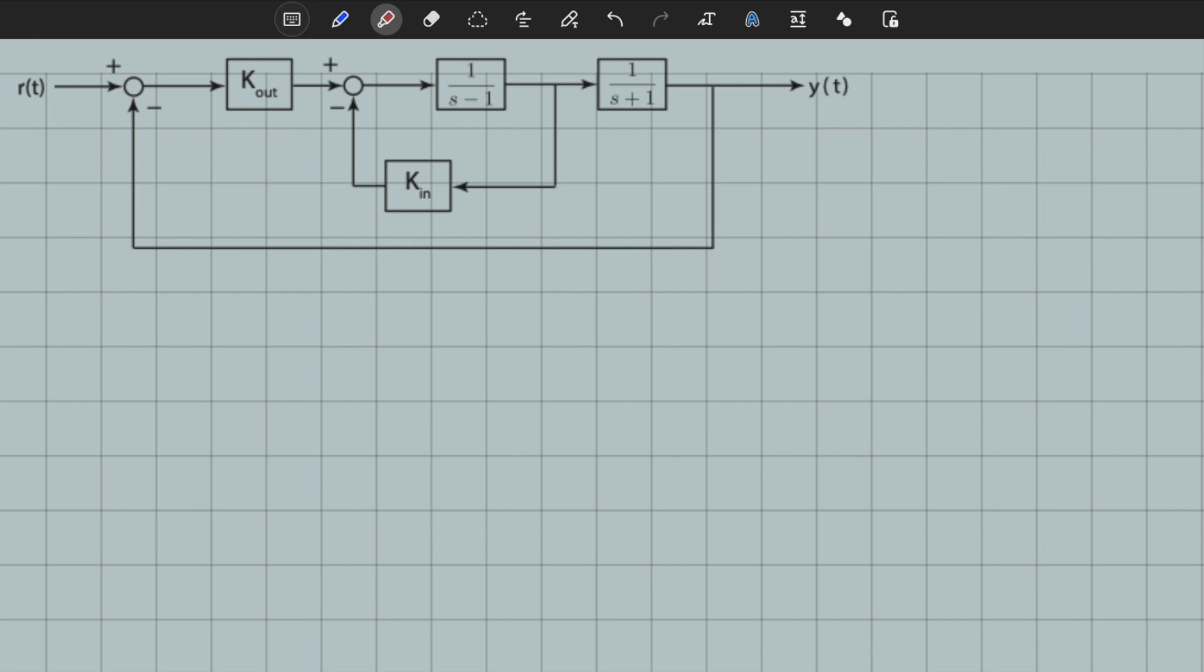If you remember, we already solved the transfer function of this topology in a previous example. We obtained the transfer function from input to output: T(s) equals k_out divided by s squared plus k_in times s plus k_in plus k_out minus 1. The idea is finding a range